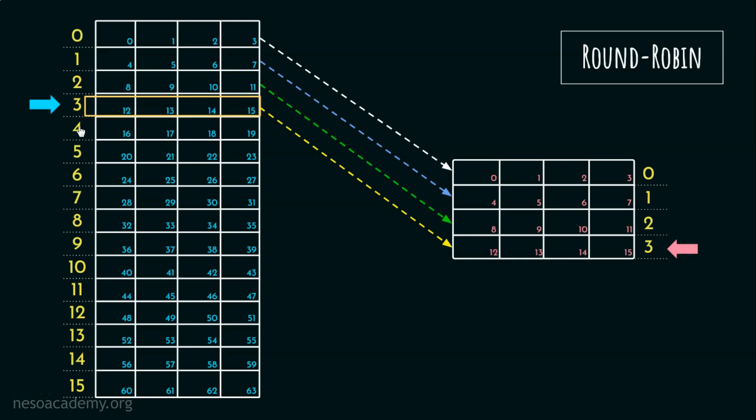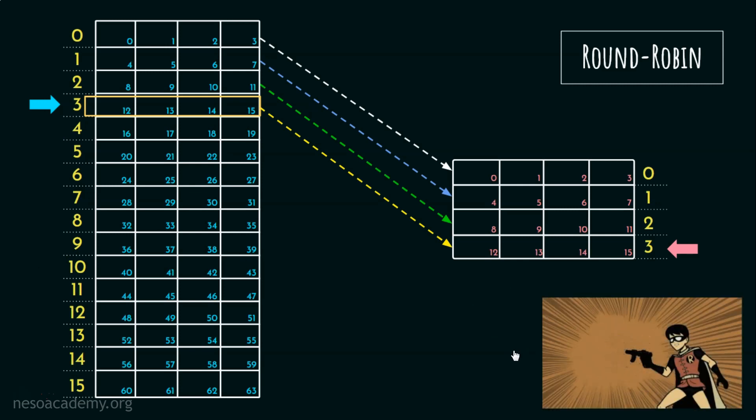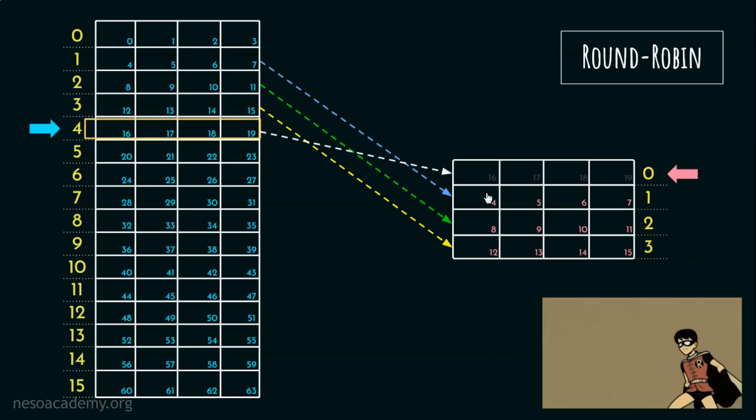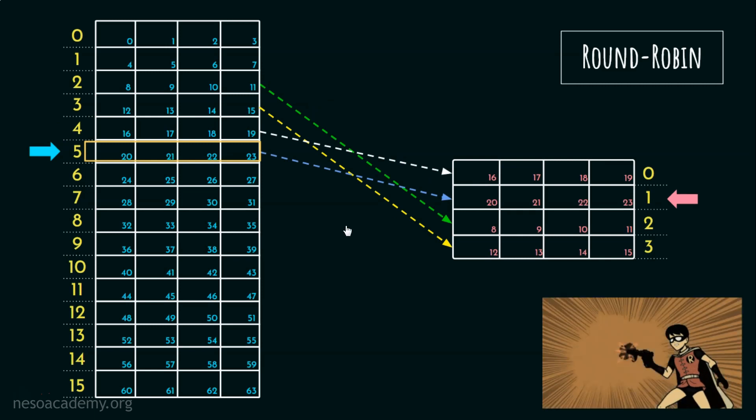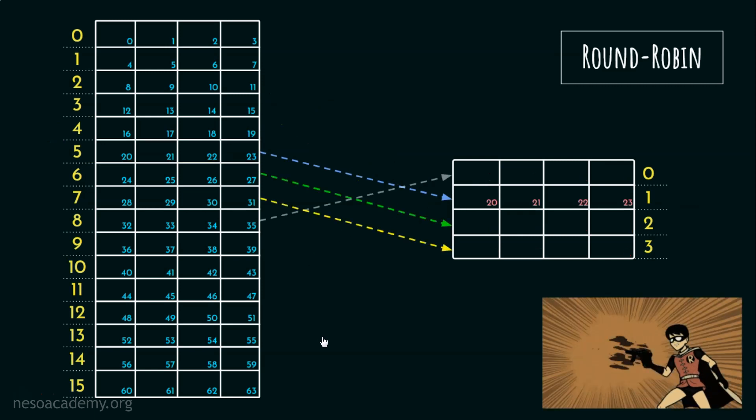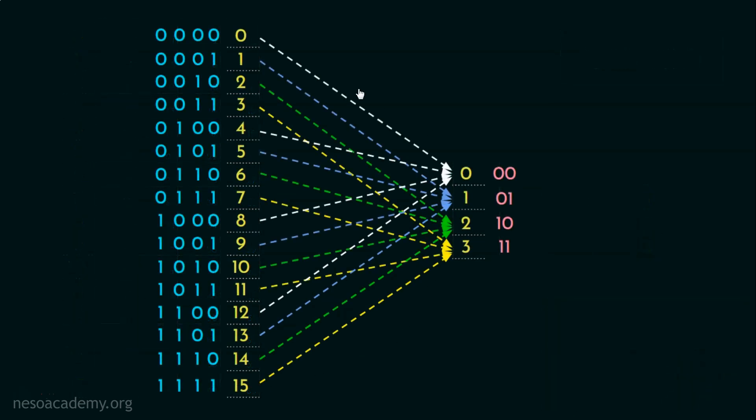At this point, we might think that for the fourth block and the rest, there are no available cache lines. But there, the round robin manner comes to rescue. So, the fourth block will be mapped onto the zeroth line and the fifth one is going to be mapped onto the first line. And this keeps on following. Now, this is the complete mapping.